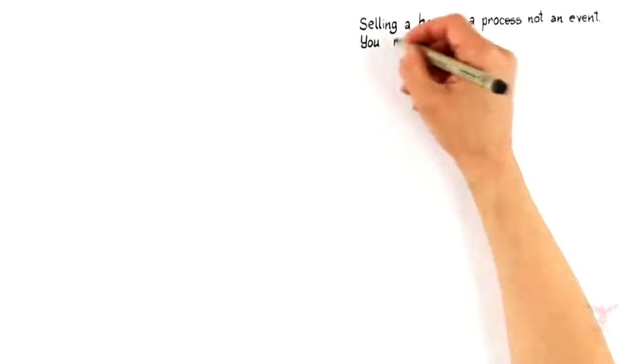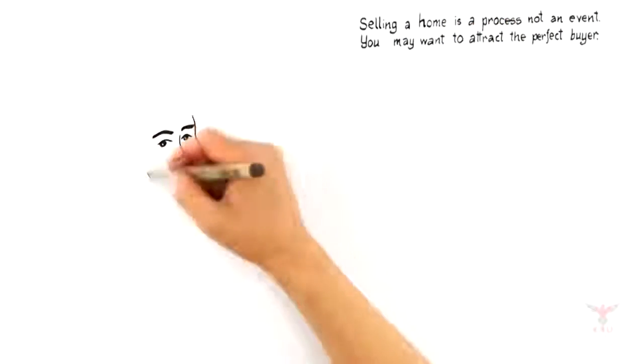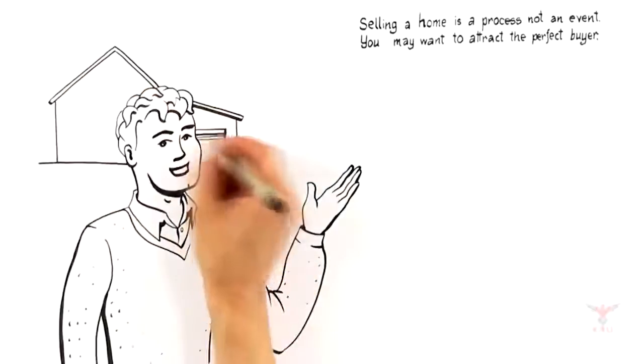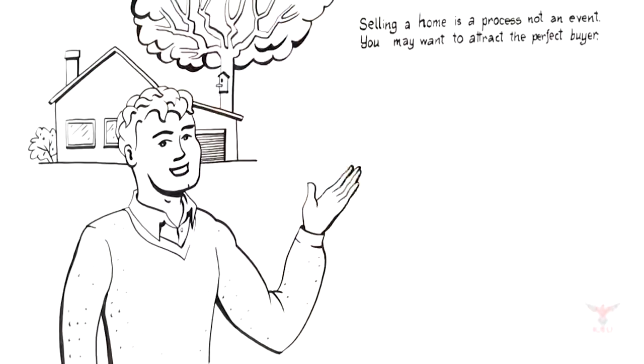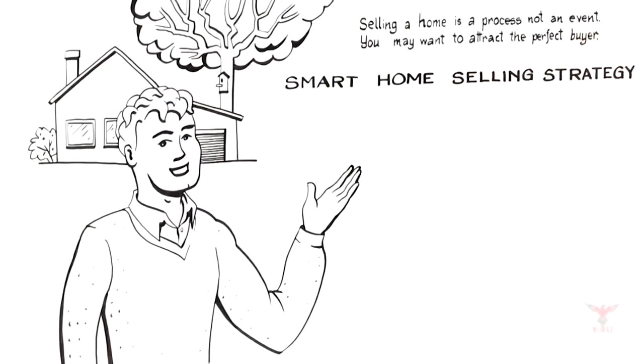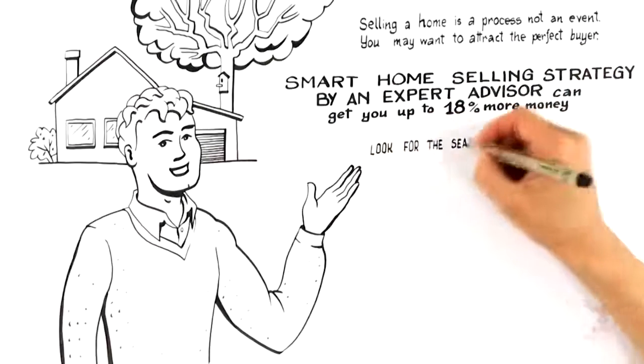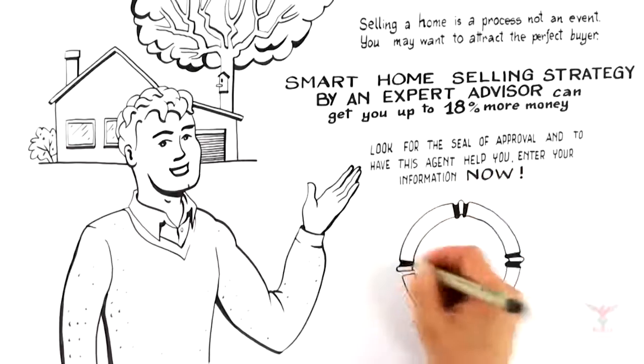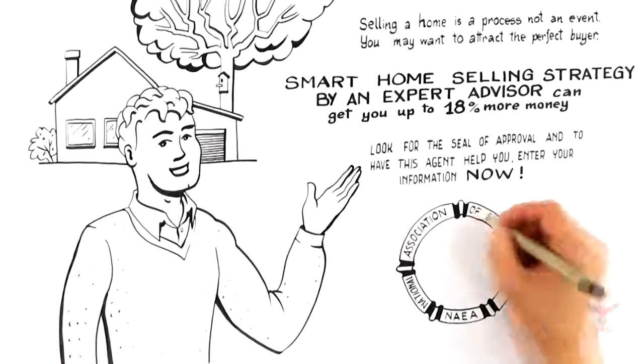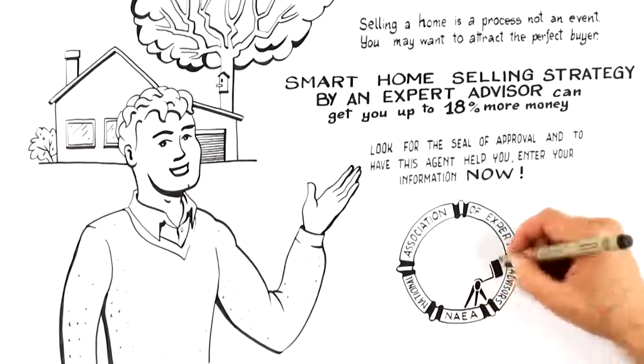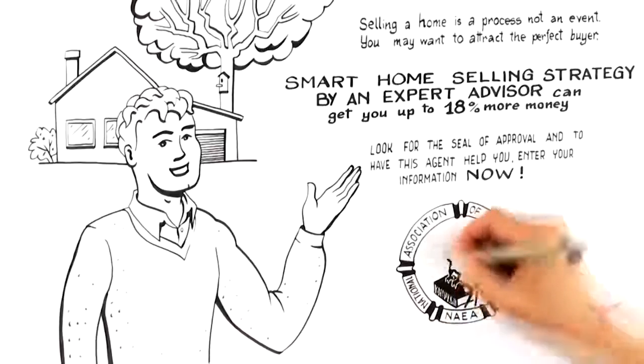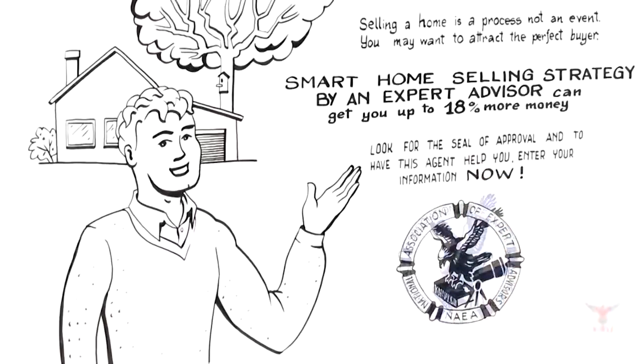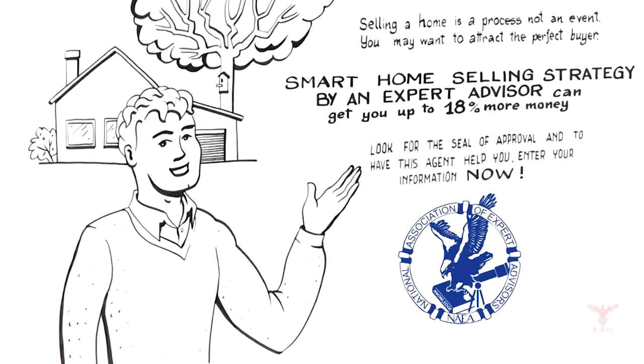By now you know selling a home is a process, not an event. You also learned how to hire an expert who can attract the perfect buyer willing to pay top dollar for your home. So if you're selling, the next logical step is to request a free, no commitment smart home selling strategy from an expert advisor. Expert advisors are members of the National Association of Expert Advisors who are trained and certified to prepare a smart home selling strategy that can sell your home faster and for up to 18% more money than the traditional real estate agent. Look for the seal of approval, and to have this agent help you, call the number now.